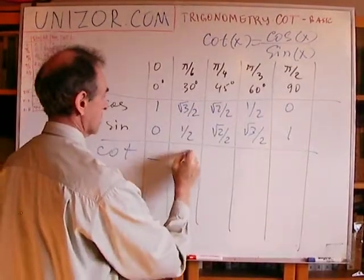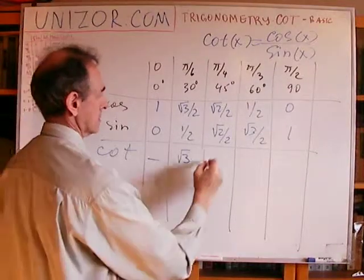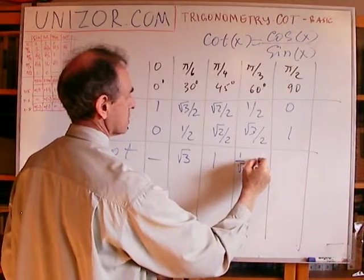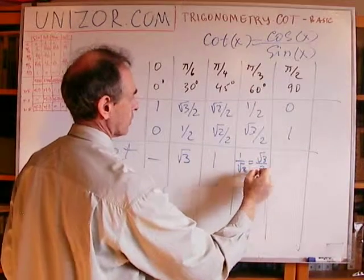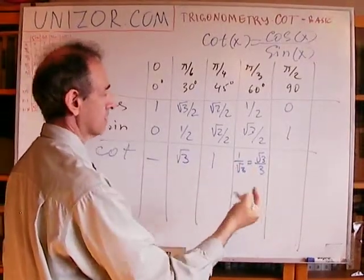This is square root of 3. This is 1. This is 1 over square root of 3, which is square root of 3 over 3. If I multiply by square root of 3, both numerator and denominator,